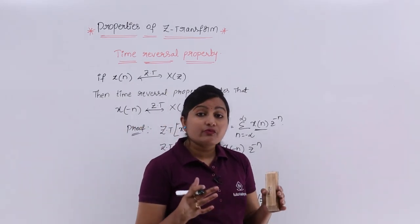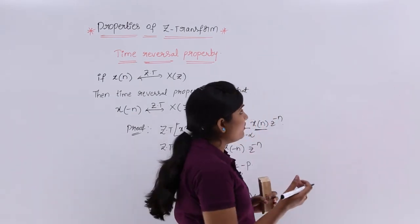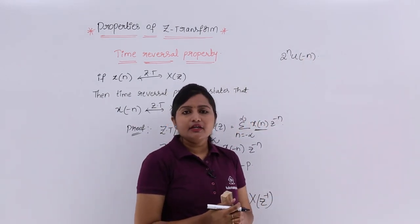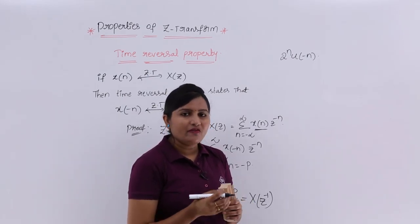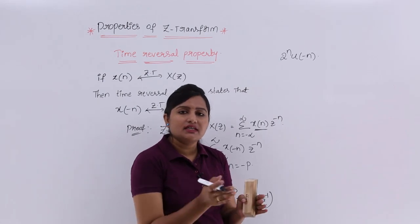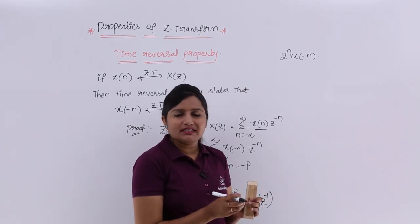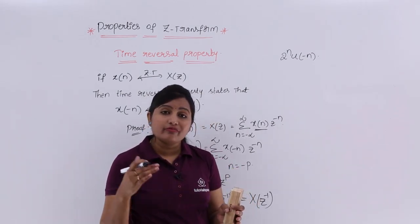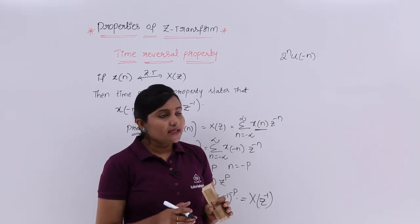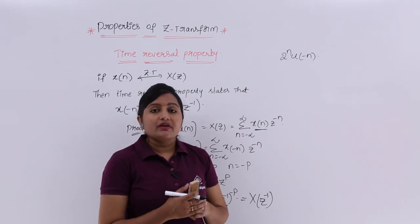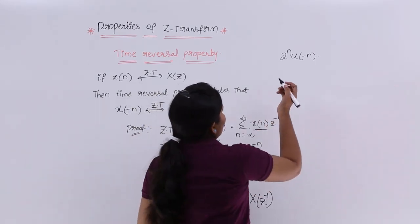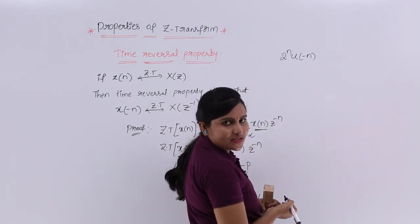Now I will consider an example where we can apply this property. For example, what is the Z-transform of 2ⁿ·U(-n)? We do not know the transforms of signals in the A^n·U(-n) form. You can check our previous classes — we derived Z-transforms for A^n·U(n) or A^n·U(-n-1) format, but not for U(-n) signals directly.